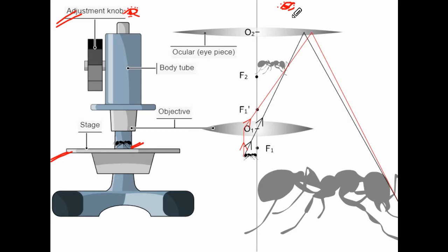With respect to the observer, the final image can be formed either at the near point or at the far point — that completely depends upon the adjustments which an observer makes. This magnification produced can be calculated with the help of a derivation, and we will obtain two different equations for magnification.